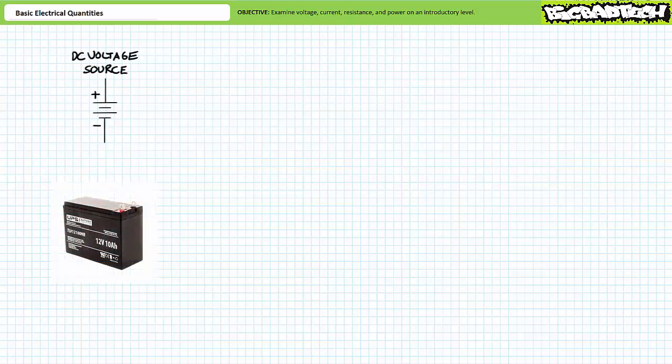This is a schematic symbol for a battery or DC voltage source. DC stands for direct current and means that the direction of induced current doesn't change. Note that the schematic symbol for a DC voltage has long lines interspaced by short lines. What this is meant to represent is the plates of a traditional lead acid battery.